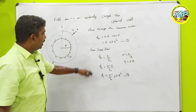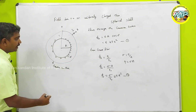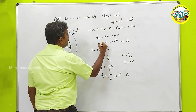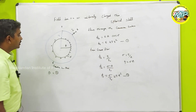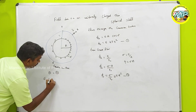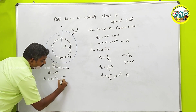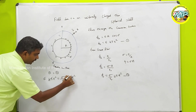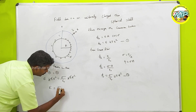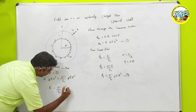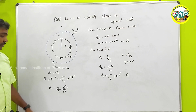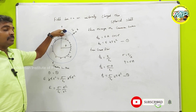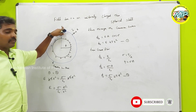Now I equate equation 1 and equation 2. Equation 1 is the flux from the Gaussian surface and equation 2 is the flux from Gauss's law. So E into 4πR² equals σ by ε₀ times 4πR². The 4πR² cancels on both sides, giving my electric field E equals σ by ε₀. This is the final expression for the electric field at point P, which can be any random point outside the shell.